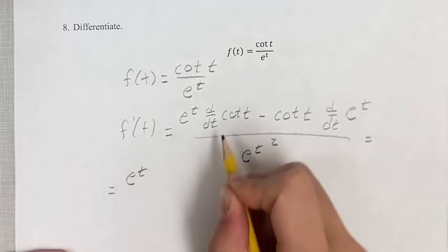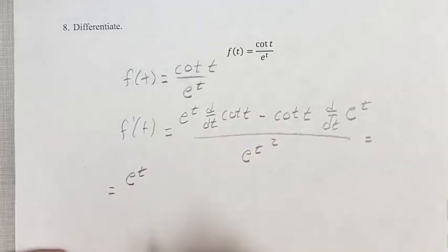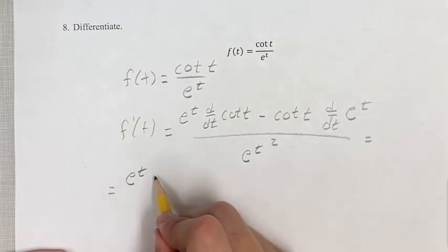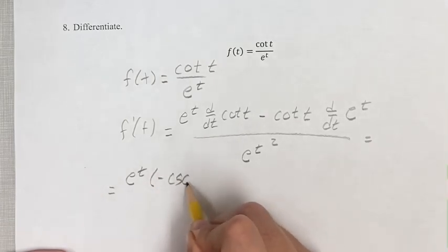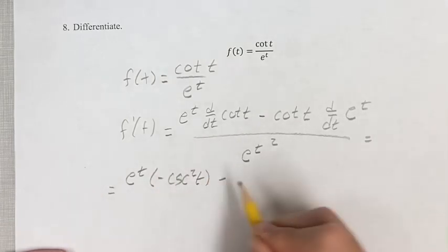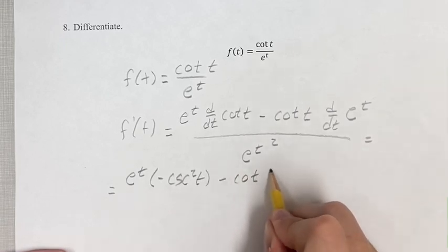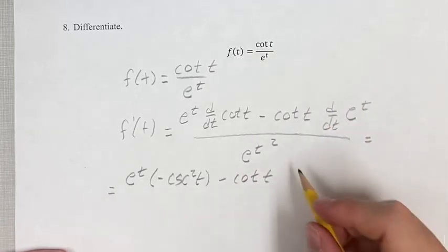We have e to the t times the derivative of cotangent, which is negative cosecant squared t, minus cotangent t. The derivative of e to the t is just e to the t.